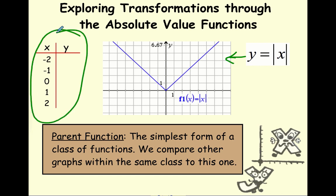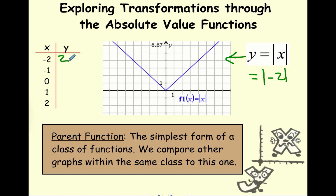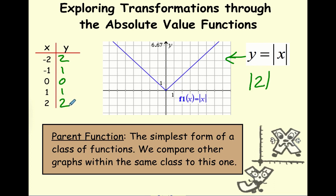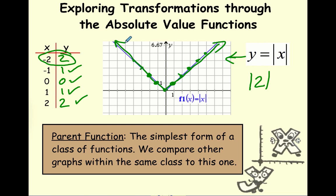Over here I have a table of values and I'm going to evaluate the function for these values. If x is negative 2, the absolute value of negative 2 is 2. Absolute value of negative 1 is 1, absolute value of 0 is 0, absolute value of 1 is 1, and absolute value of 2 is 2. These are ordered pairs: negative 2 comma 2, negative 1 comma 1, 0 comma 0, 1 comma 1, and 2 comma 2. This is the parent function of the absolute value function.